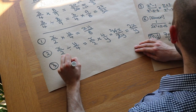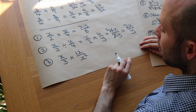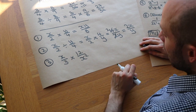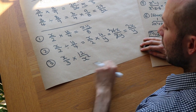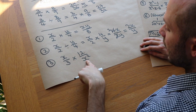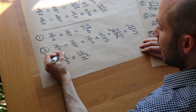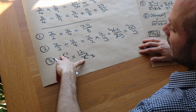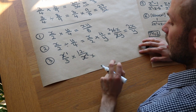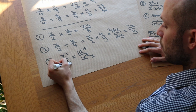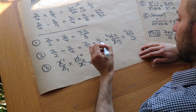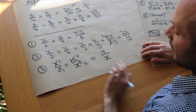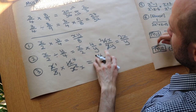For x over 3 times by 12 over x squared, there's a technique called cross-cancelling. We can see what cancels diagonally: x and x squared — divide both by x to get 1 and x. Then 12 and 3 — divide both by 3 to get 4 and 1. So we get 1 times 4 at the top, which is 4, and 1 times x at the bottom, which is x, giving 4 over x. If you don't like that method, it's fine to multiply first and simplify later.